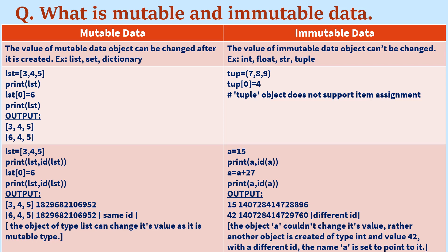Similarly, here the list lst has values 3, 4, and 5. If you print it along with the id of lst — since every object is given a unique id in memory — you can see the id. Now in the same list, if you modify the value at index zero to 6 and print the id again, it will give you the same id. That means the changes occurred in the same list object, because it is a mutable data object — whatever changes you make occur within the same object.